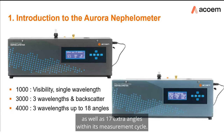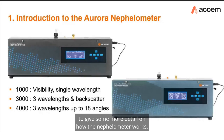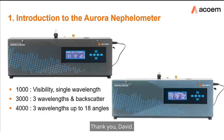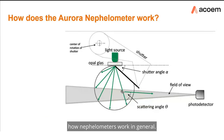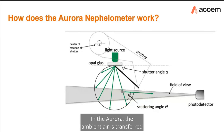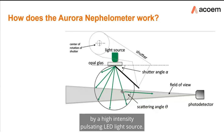I'll pass over to David Logan to give more detail on how the nephilometer works. In the Aurora, the ambient air is transferred into the optical cell where it's illuminated by a high-intensity pulsating LED light source.